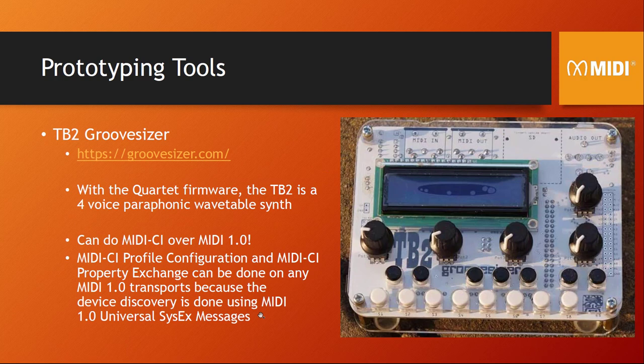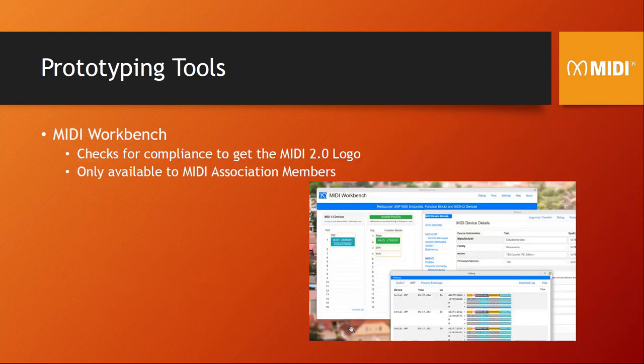It turns out there is a device you can buy, but it only supports MIDI 1.0 — however, over MIDI 1.0 they implemented MIDI-CI, so you can test profile configuration and Property Exchange. This is a simple groove synthesizer which is fully open source — you can look it up at groovesizer.com. There is a firmware update available and it can be used for a basic test of Property Exchange. There is also another tool from the MIDI Association called the MIDI Workbench, which allows you to run different protocol tests and is used to check compatibility of a MIDI 2.0 implementation — including getting approval to put the MIDI 2.0 logo on your device. Sadly, the MIDI Workbench is also only available to full paying MIDI Association members.